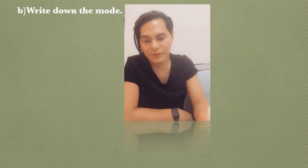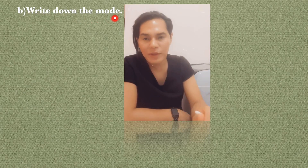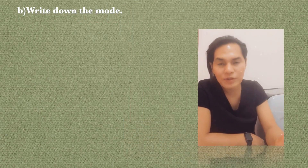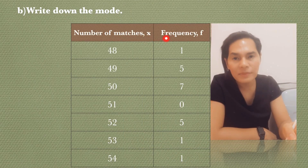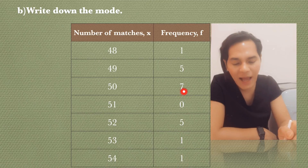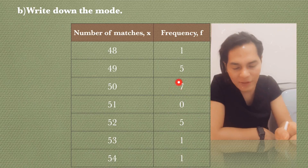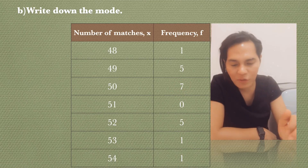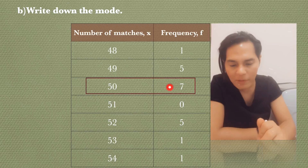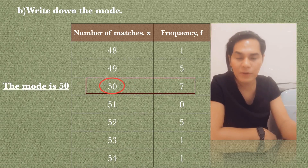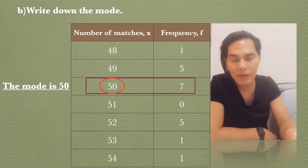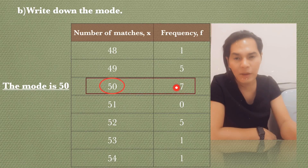Next, write down the mode. Look at the frequency column and find the highest frequency — that's 7. Check the corresponding number of matches, which is 50. Therefore, the mode is 50 because this is the value that repeats the highest number of times.